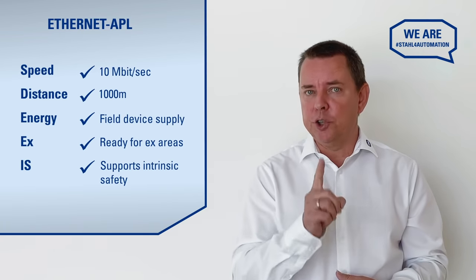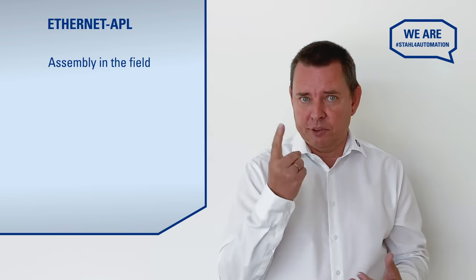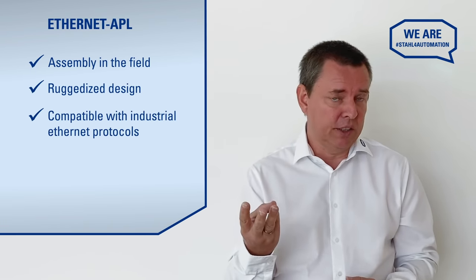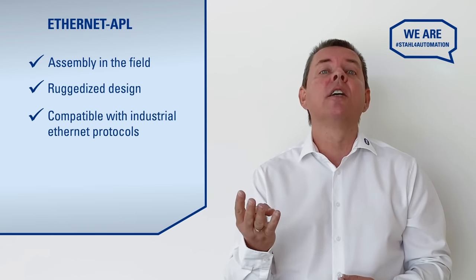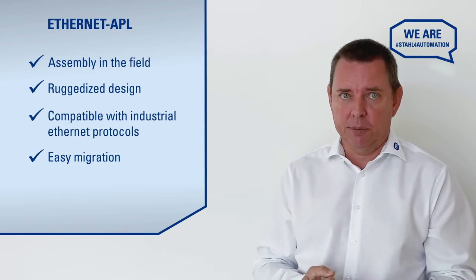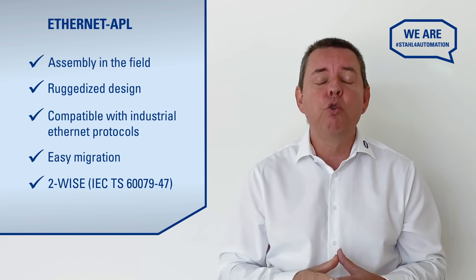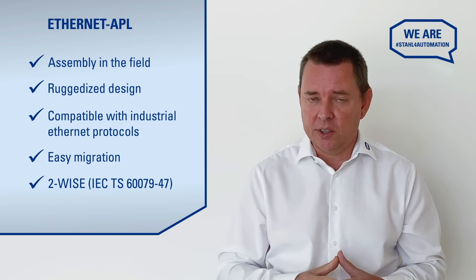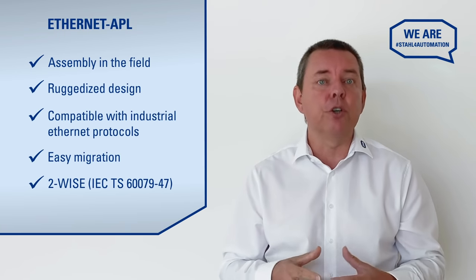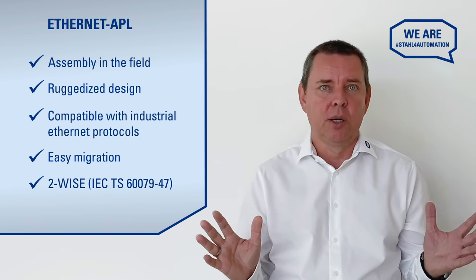What does all that mean for you? Ethernet APL can be installed in the field, it's rugged enough for heavy duty use, it's compatible with the relevant Ethernet protocols, and it offers a simple migration path because it uses familiar fieldbus type A cables. And maybe the best part — because it supports two-wire intrinsically safe Ethernet, it's easier than ever to verify the intrinsic safety of your loops, because two-wire approved devices don't require any calculations. Pretty neat, right?